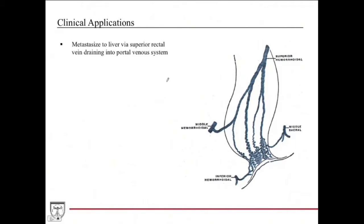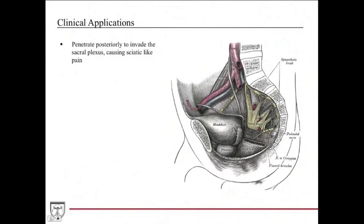Rectal cancer can metastasize to the liver via the superior rectal vein — traveling hematogenously through the portal system. It can also penetrate posteriorly into the sacral plexus, which can cause a sciatic-like pain because the sciatic nerve comes directly off this plexus, mimicking symptoms of sciatica.